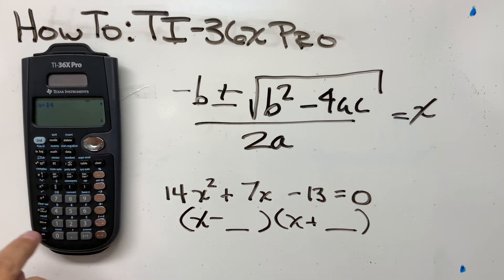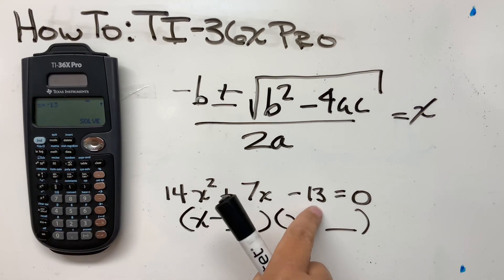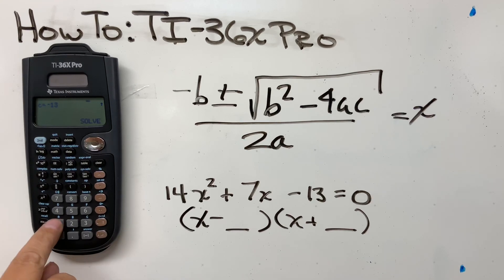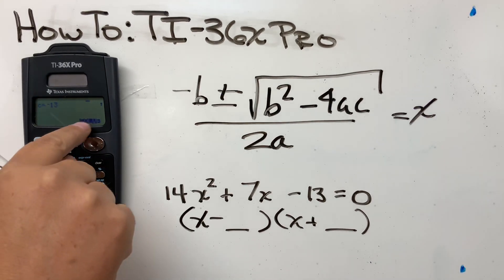And you enter your A, 14, enter. You enter your B, 7, enter. You'll enter your C, minus 13, enter. And it'll go to solve here.